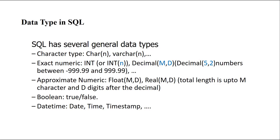For approximate numbers we have FLOAT and REAL. Similar to DECIMAL they have two inputs m and d, where m is the total length. However, in FLOAT and REAL, d represents the maximum number of digits after the decimal — they are not forced to have exactly d digits, unlike DECIMAL.